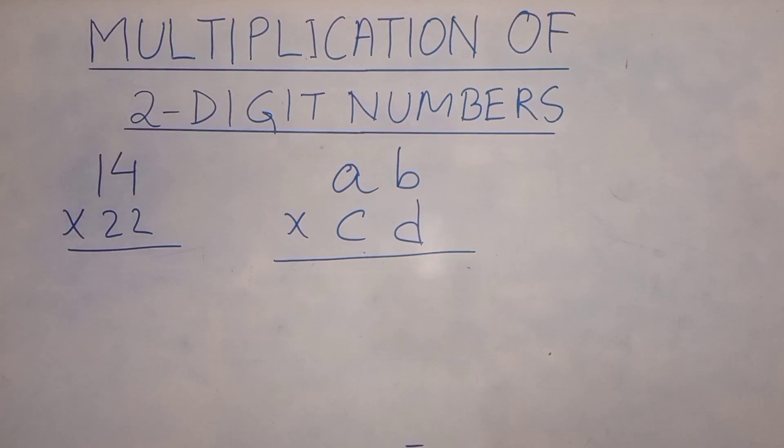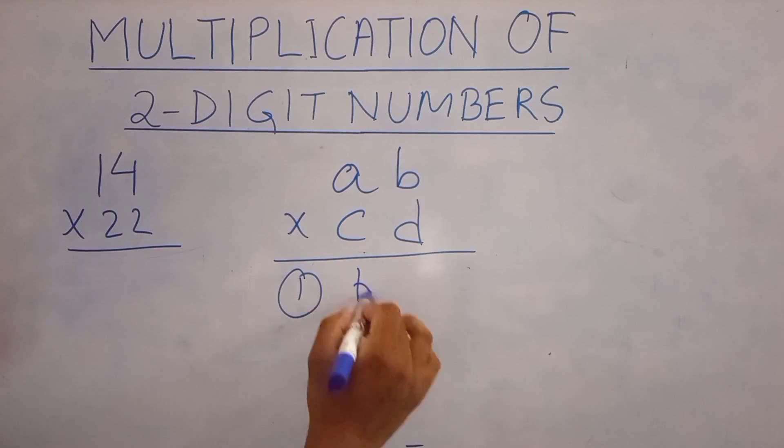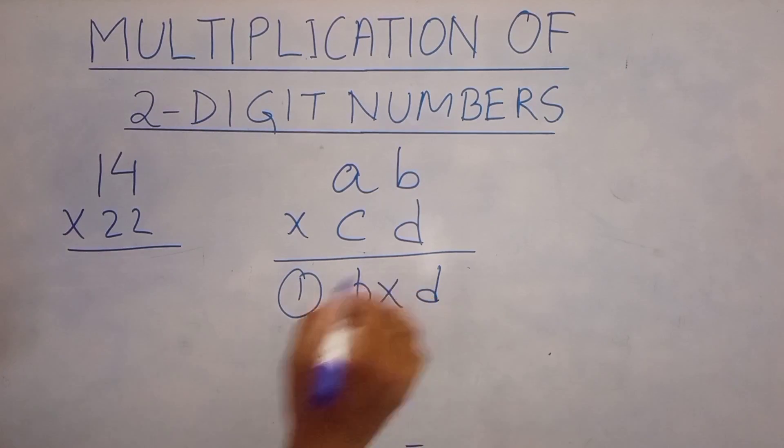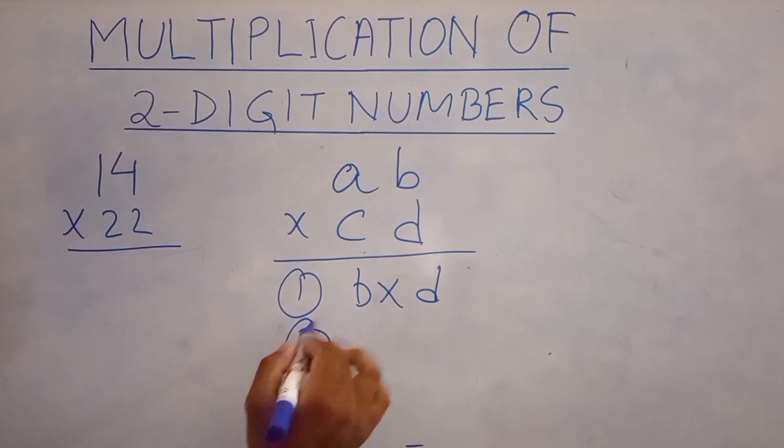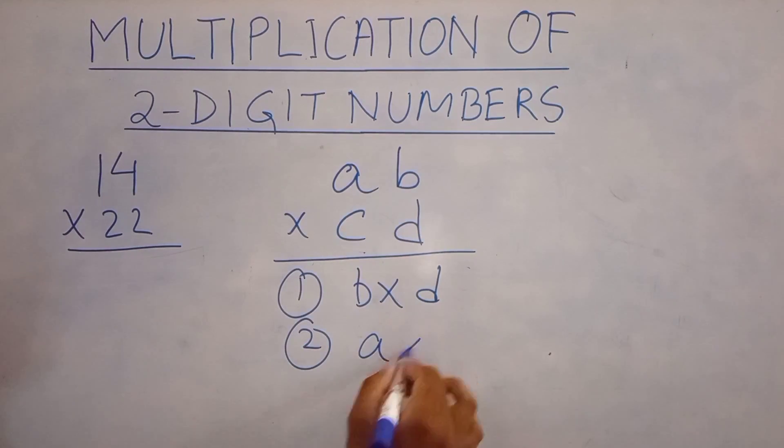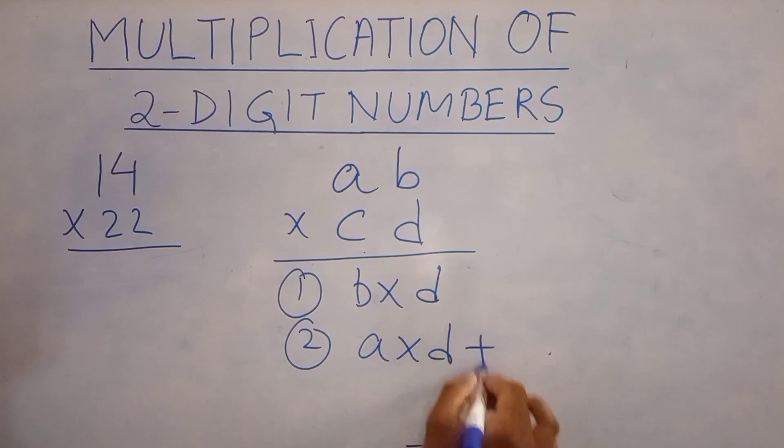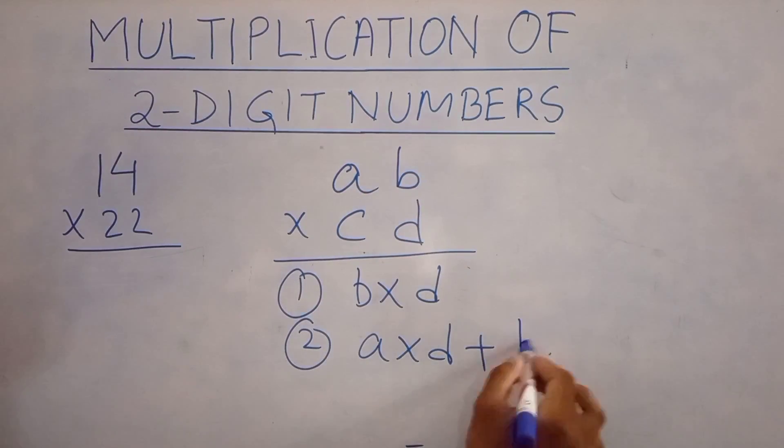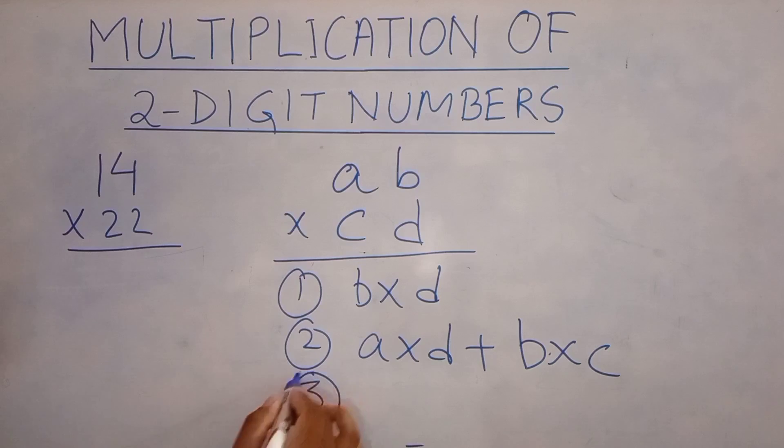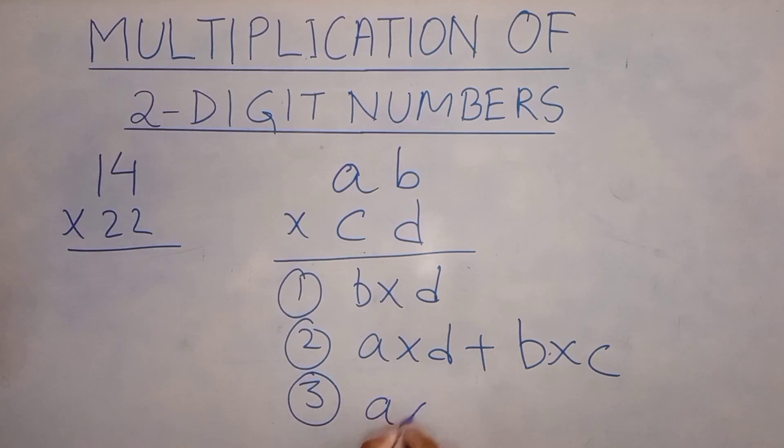So to do this multiplication we have to follow three steps. Step number one: multiply B and D. Step number two: multiply A × D and add it to B × C. And step number three: multiply A and C. So let's begin.